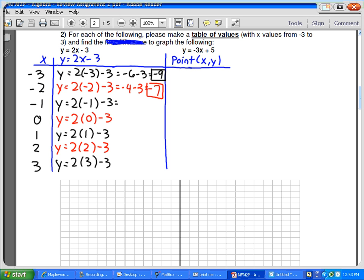Then we're going to get here, negative 2. 2 times negative 1 is negative 2, minus 3, which would be negative 5. This is going to be 0 minus 3 is negative 3. This is going to be 2 minus 3 is negative 1. This is 4 minus 3 which is 1. This is 6 minus 3 which is 3. There's my chart.